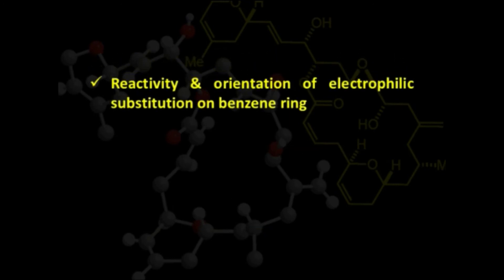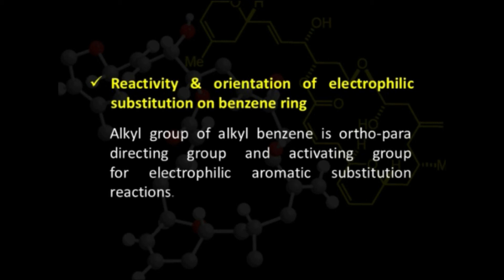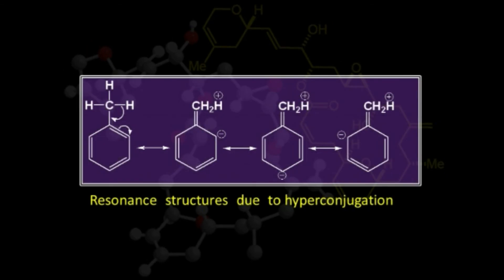Hyperconjugation also explains the reactivity and orientation of electrophilic substitution on the benzene ring. The alkyl group of alkylbenzene is ortho-para-directing and behaves as an activating group for electrophilic aromatic substitution. This behaviour can be understood on the basis of hyperconjugation. The carbon-hydrogen sigma bond at the conjugate position with respect to the carbon-carbon pi bond enters into resonance due to hyperconjugation, making the methyl group capable of releasing electrons towards the benzene ring.